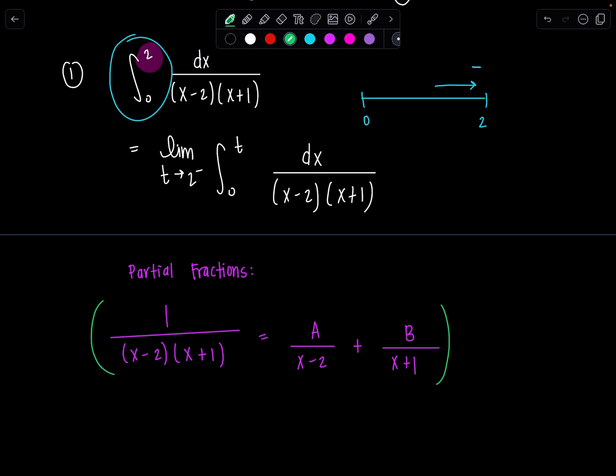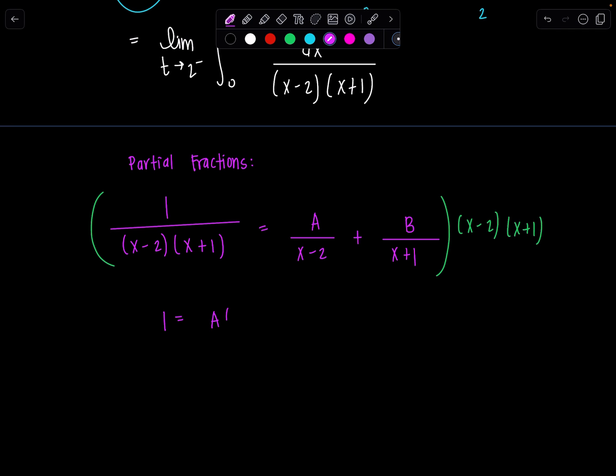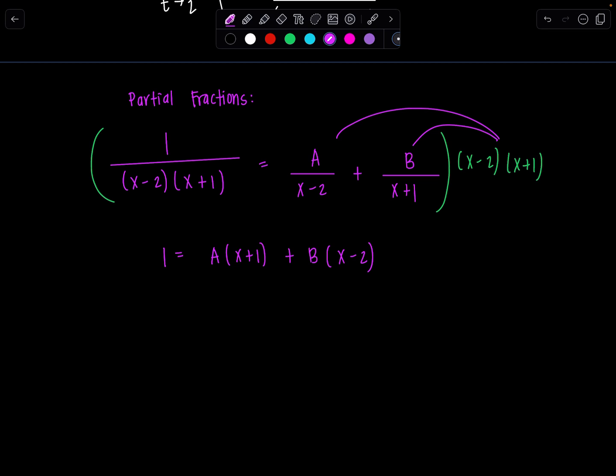So then multiply everybody by the LCD, which is x minus 2, x plus 1. And then we have here 1 equals A, if I distribute, x minus 2 cancel, so A times x plus 1 plus B times x minus 2. And then now we can do a different technique. We can let x equals negative 1. I chose that because that would make this whole factor a 0 and solve for one of the constants. So I'd have 1 equals A times 0 plus B times negative 1 minus 2. That's negative 3. So then B is negative 1 third. And then similarly, I'm going to let x equal positive 2. And then I have 1 equals A times 2 plus 1 plus B times 0. So A is positive 1 third.